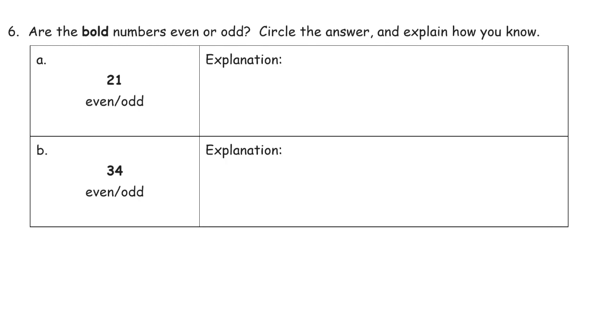Are the bold numbers even or odd? Circle the answer and explain how you know. So here's 21. I'm going to say that that's odd. And the reason why is that the 1s place digit is odd. And that's one way to do it. You could draw a picture of it in an array with two rows. And you can see that you can't make an array out of it because you're going to have an extra one left over. Or you could draw 21 x's and then pair them up and show. That's another way that you can do a picture for your explanation.